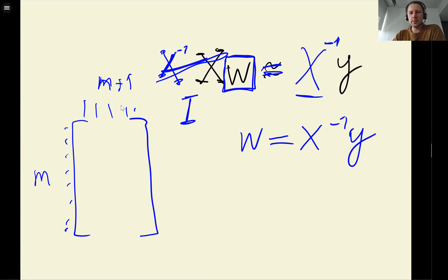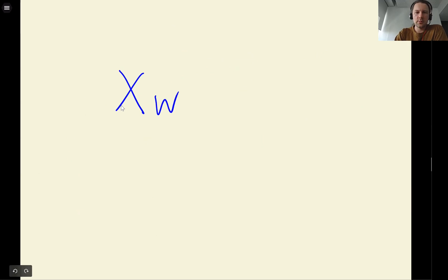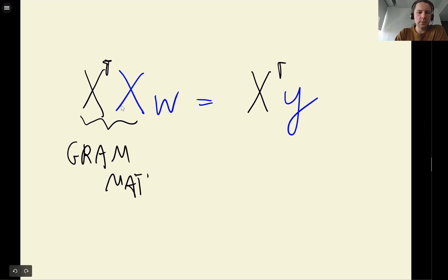So for this system that we have, the solution doesn't exist. We can try to find an approximate solution to this by multiplying this by x transpose. So this matrix is called the Gram matrix. And for this matrix, the inverse exists usually, because it's squared. So the dimension of this will be n plus one times n plus one. So for this one, inverse should exist. It doesn't always exist, but we will talk about this a bit later.